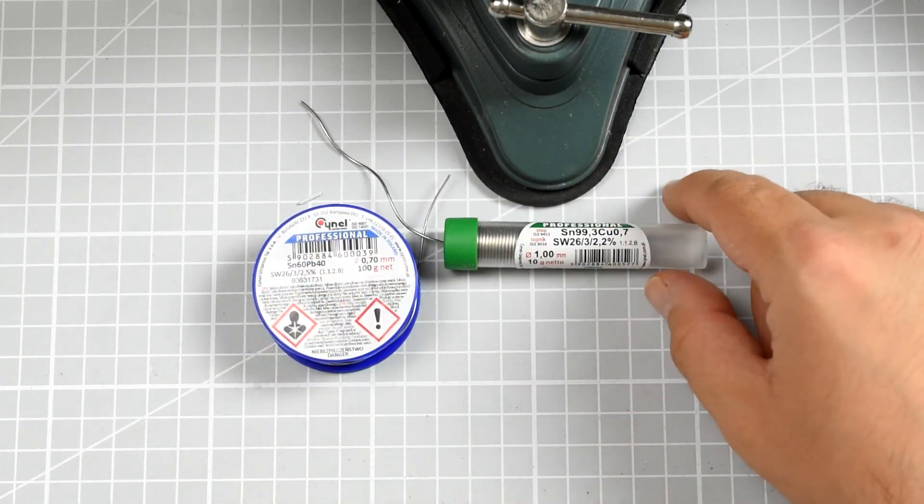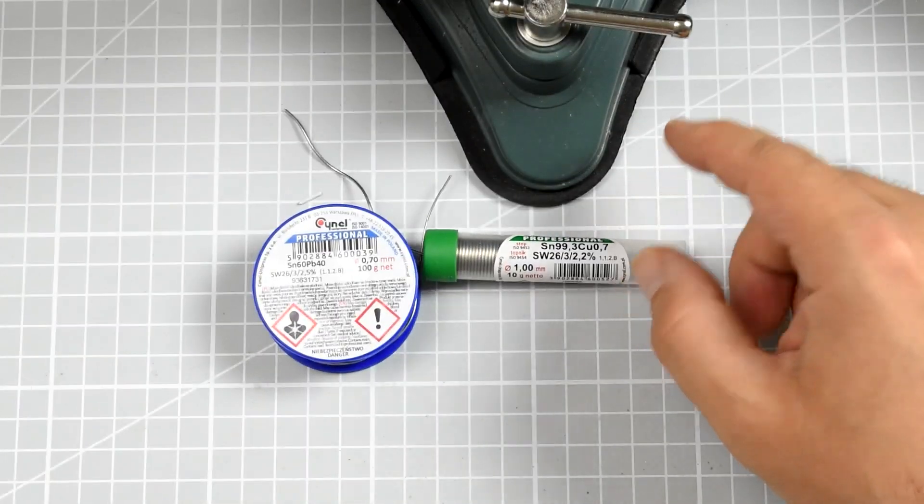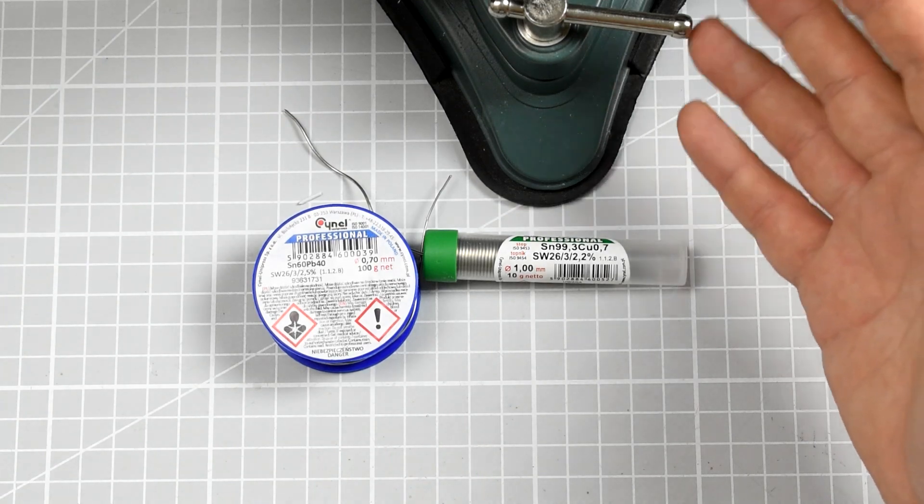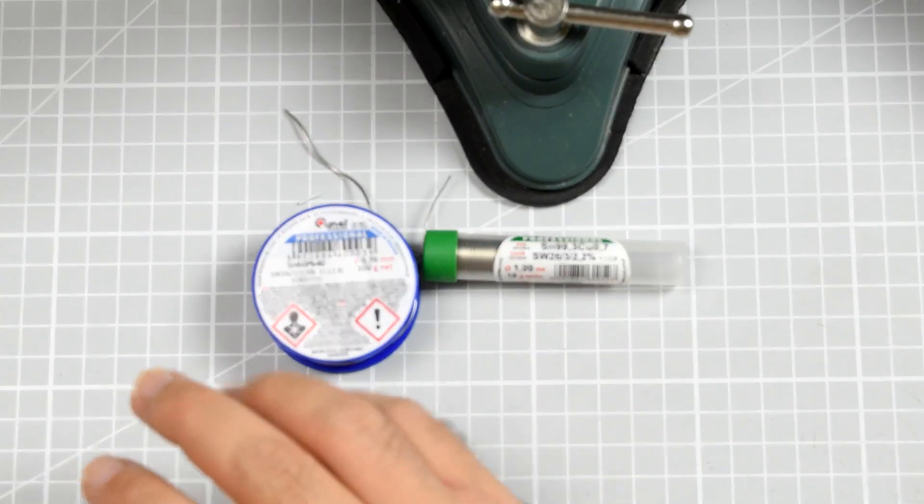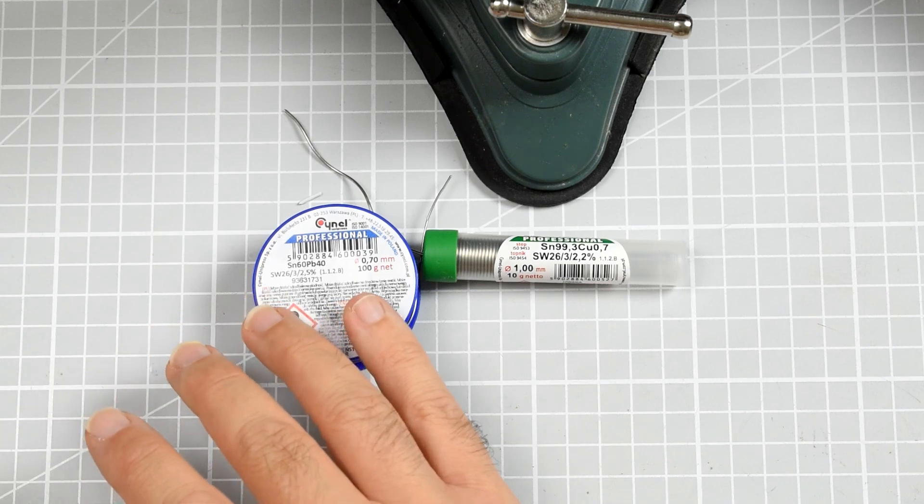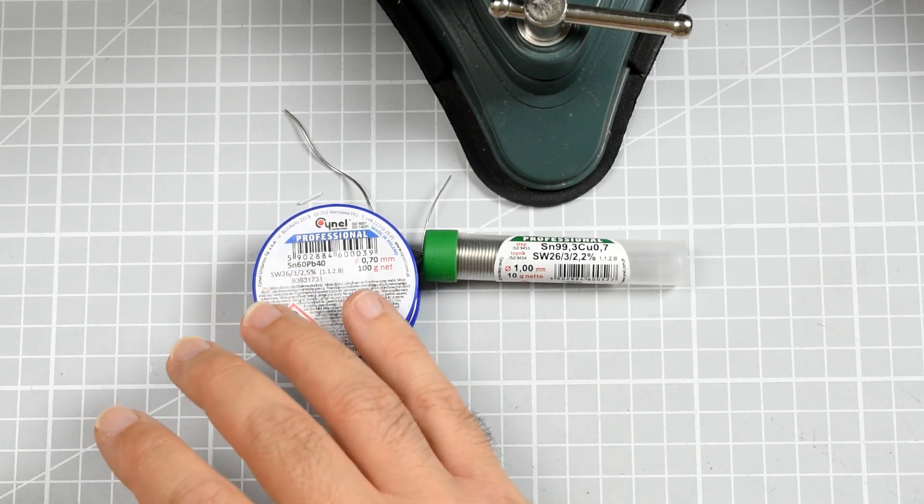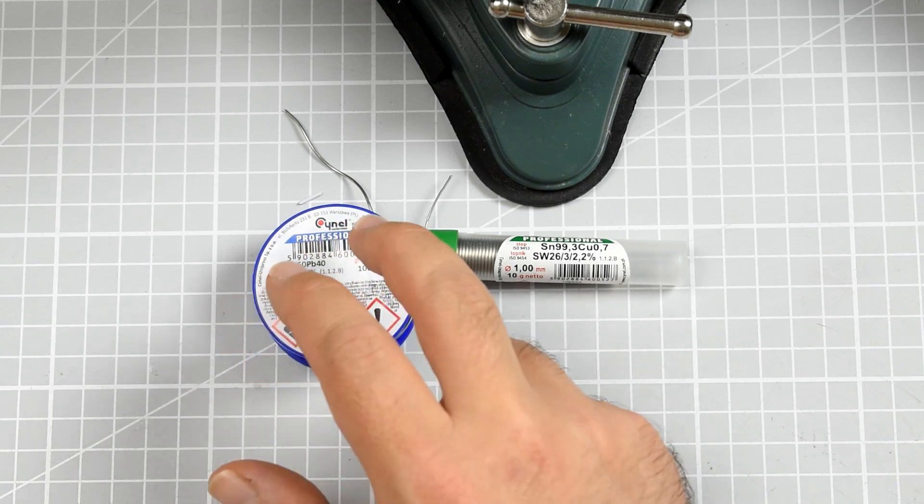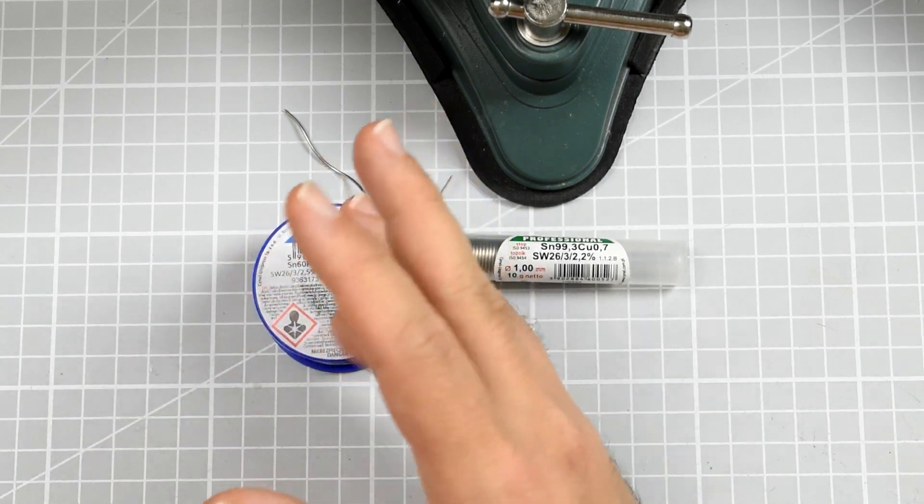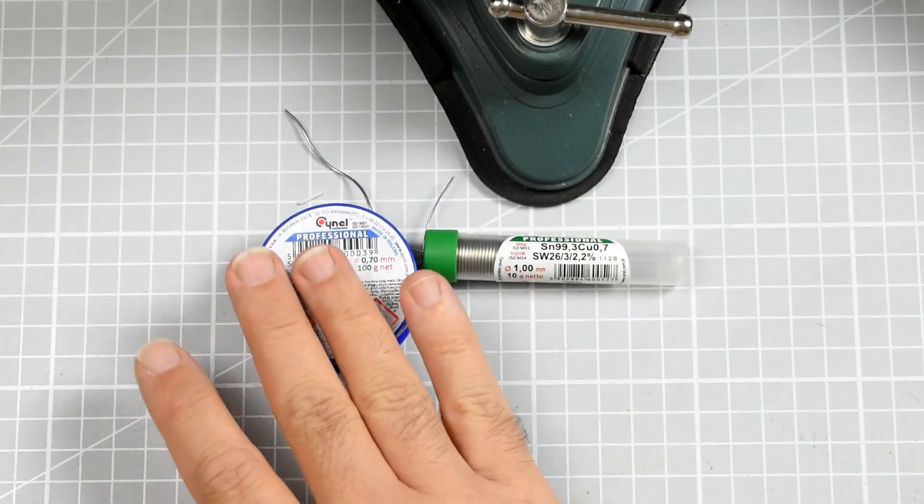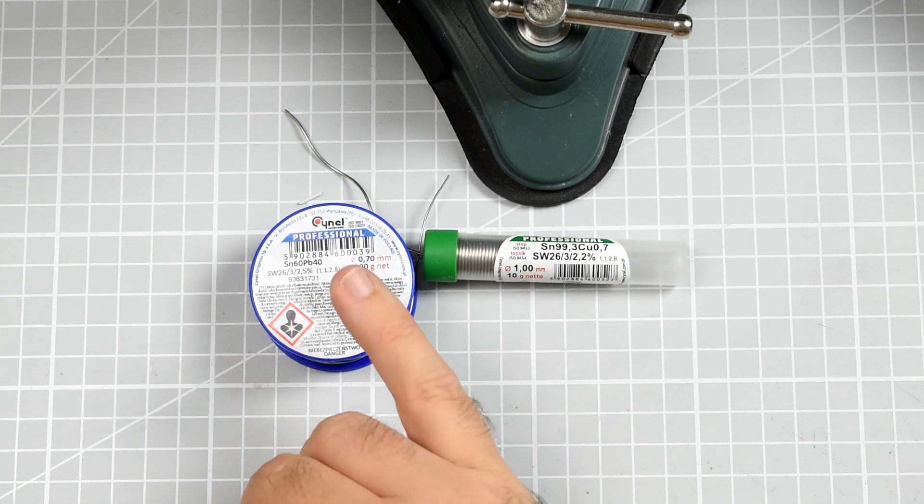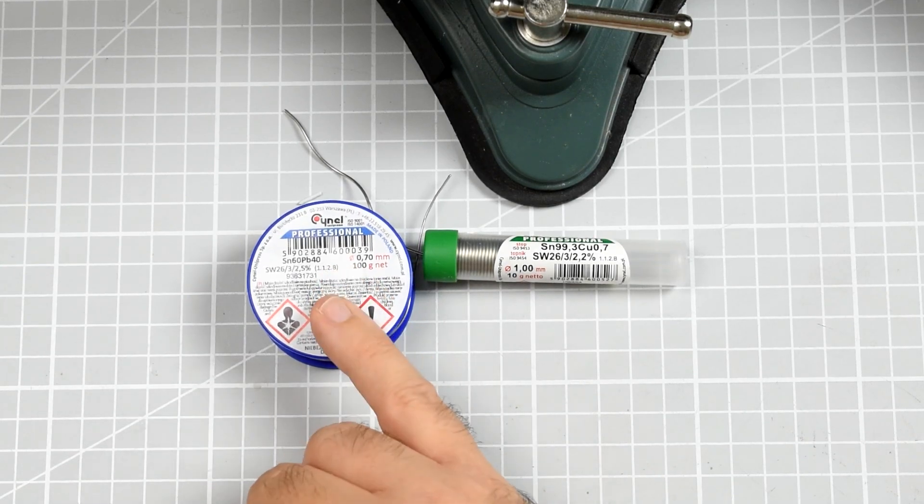But does it mean that for example I will be migrating from the traditional SN60PB40 to this copper thing? No, rather not. I got it for the experiment and the experiment proven that yeah, it kind of works. However, if you do not really have to be meeting all the European Union requirements and RoHS norms or however this thing is called, then yeah, probably you are still better with the leaded solder.